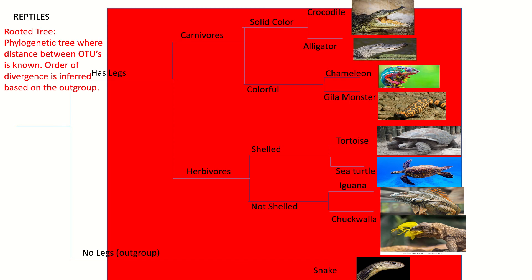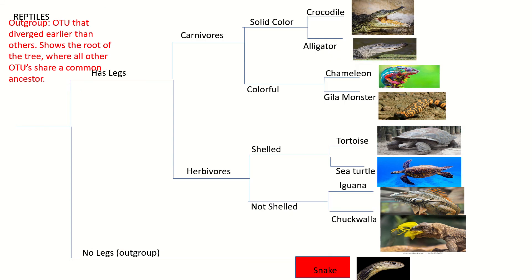The next definition is a rooted tree, which is a type of phylogenetic tree where the distance between the OTUs is known, and the order of divergence is inferred based on the out group. Our entire tree is an example of a rooted tree. The next definition is out group, which is an OTU that diverged earlier than all others, and it can show the root of the tree where all other OTUs share a common ancestor, and the snake is an example of our out group.